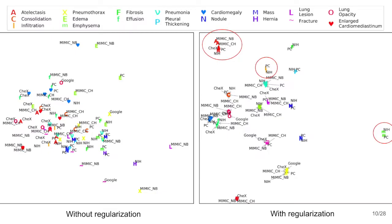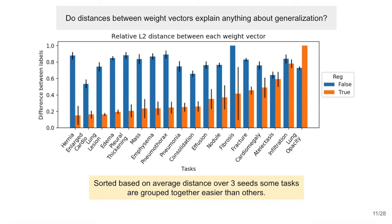Here, each task vector is shown in 2D using PCA. On the right, we can see that the tasks cluster together and some clusters are tighter than others. Looking at the average distances between task vectors over multiple runs, we can see that some tasks are often grouped tighter than others. This implies these tasks are more conserved across datasets.